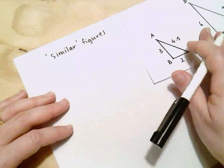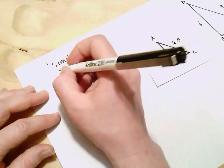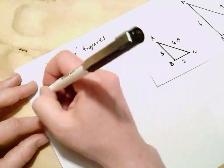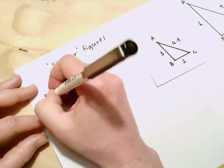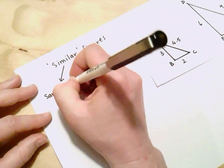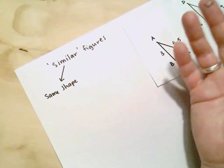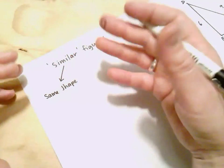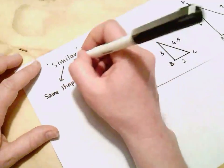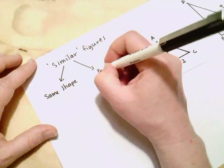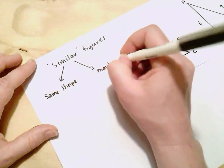So the two properties of similar shapes. The first property is that they are the same shape. So not just triangles but they're actually the same shape as a triangle or the same shape as a quadrilateral. But they may be different sizes.